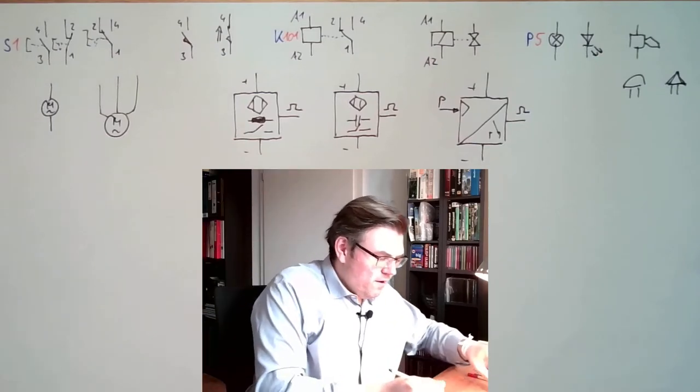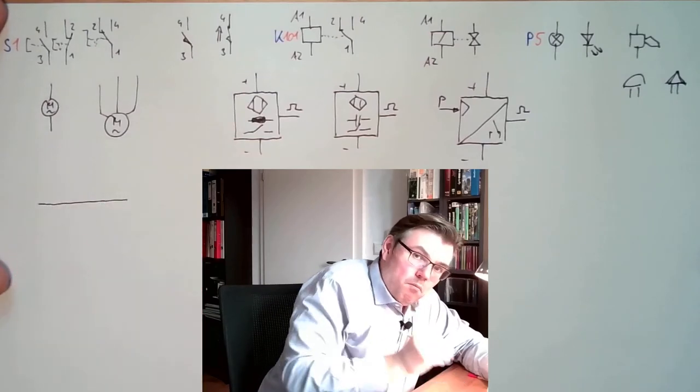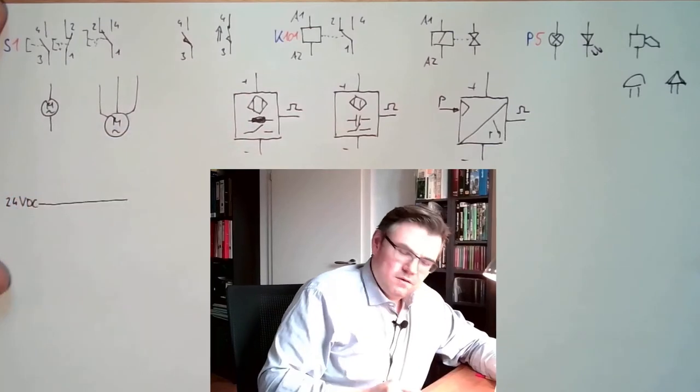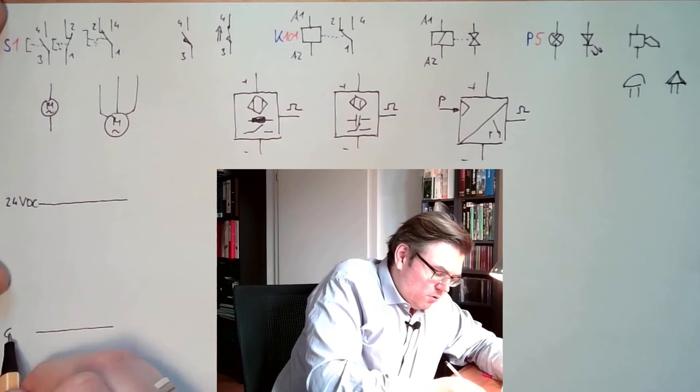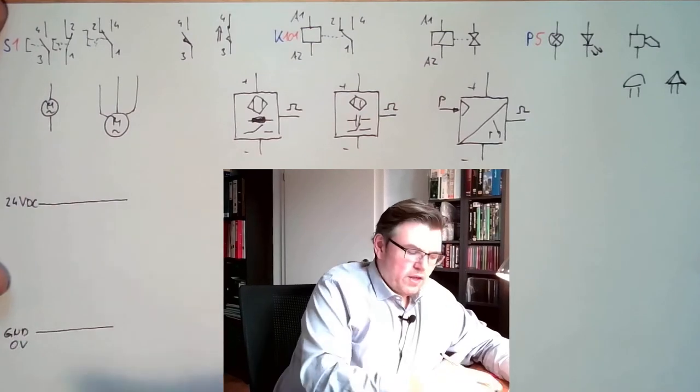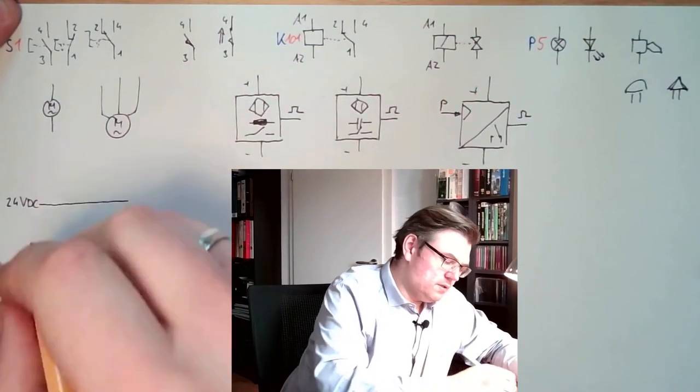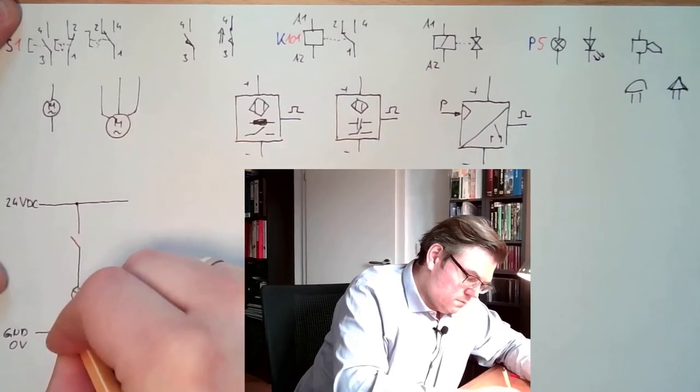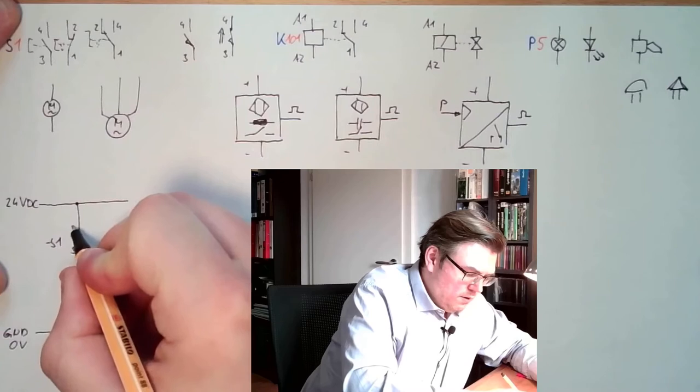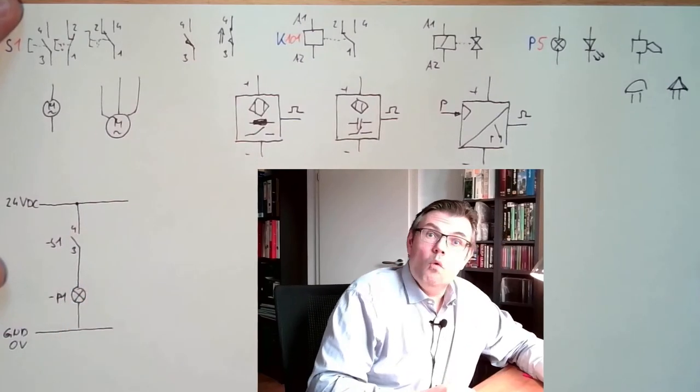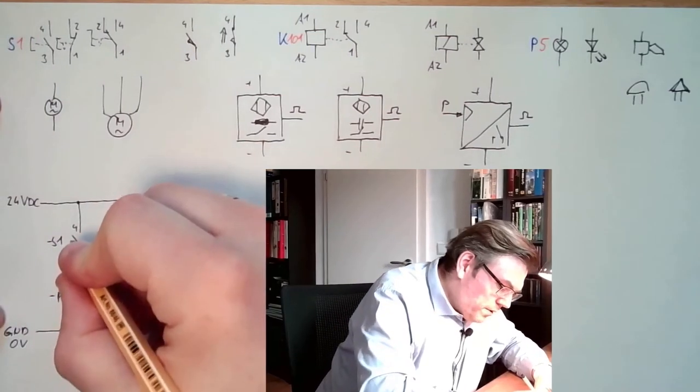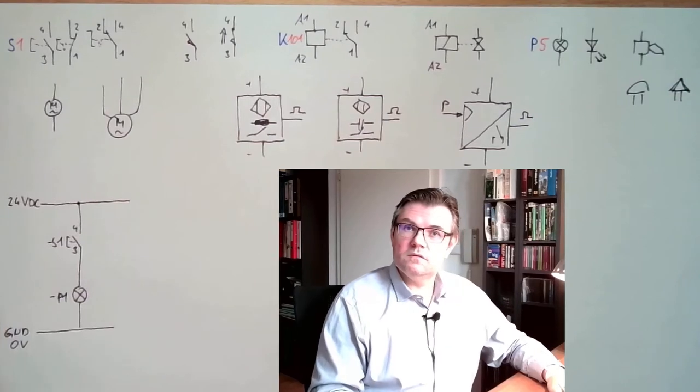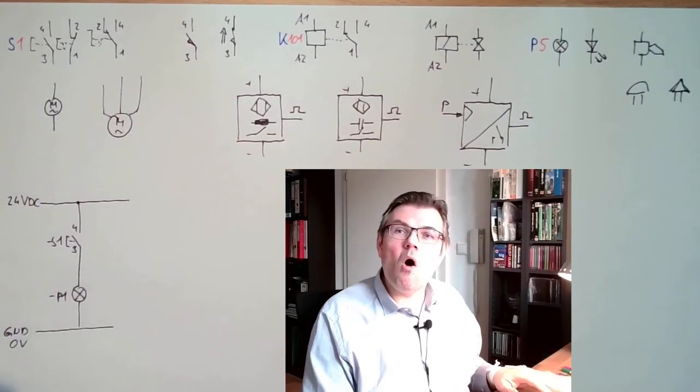So we have somewhere a line which has power. This is usually labeled. So let's call it 24 volt DC. And down there, we have somewhere a line. This is ground, or maybe marked with zero volts. And in between, I can use my elements. For instance, if I'm having a thing like this. This is S1, 3, 4, this is P1. What is this doing? The operation is missing. If I'm pushing the button, P1 is lit. If I'm releasing the button, P1 is off.